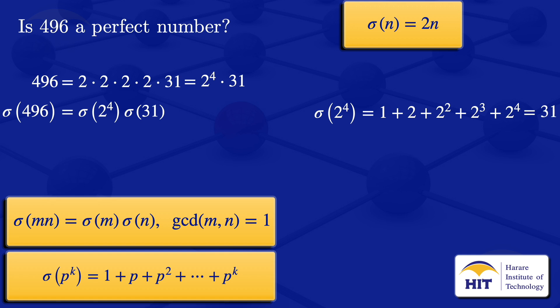For sigma(31), we can see that 31 is a prime, so using this formula, p equals 31 and k equals 1. We get sigma(31) equals 1 plus 31, which gives us 32.